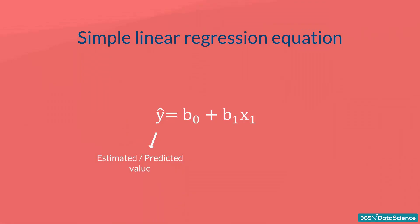b0 is the estimate of the regression constant beta 0, while b1 is the estimate of beta 1, and x is the sample data for the independent variable.